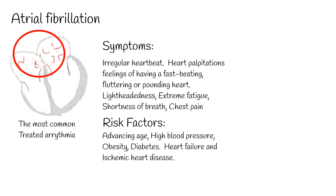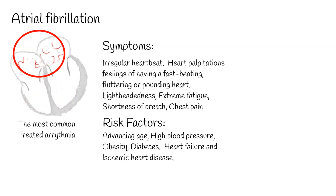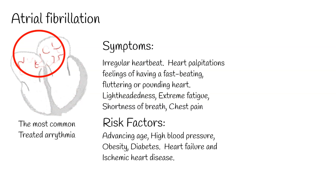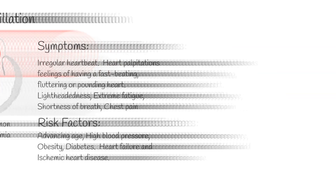The main goals of treatment are to prevent circulatory instability and stroke. Rate or rhythm control is used to achieve the former, whereas anticoagulation is used to decrease the risk of the latter. If cardiovascular instability is present due to uncontrolled tachycardia, immediate cardioversion is indicated.